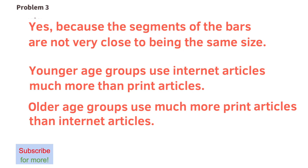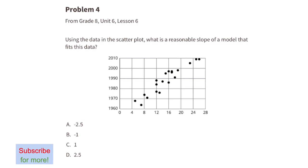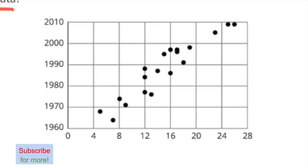Problem 4 (from 8th grade Unit 6, Lesson 6): Using the data in the scatter plot, what is a reasonable slope of a model that fits this data? We can find a reasonable slope by drawing a straight line evenly through the middle of the points. This line almost goes through the intersection of 12 and 1980, so we place a point there on the line.